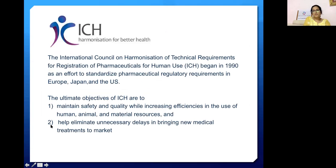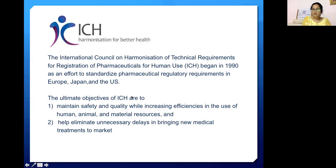Another important definition is ICH — the International Council on Harmonization for Technical Requirements for Registration of Pharmaceuticals for Human Use. ICH began in 1990 as an effort to standardize pharmaceutical regulatory requirements in Europe, Japan, and the US. The ultimate objective of ICH is to maintain safety and quality while increasing efficiencies in the use of human, animal, and material resources, and to help eliminate unnecessary delays in bringing new medical treatments to market.